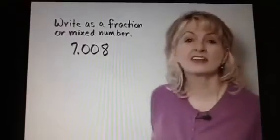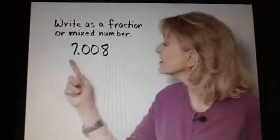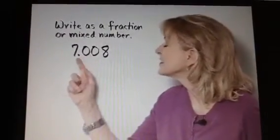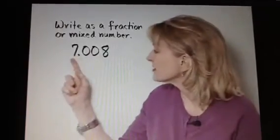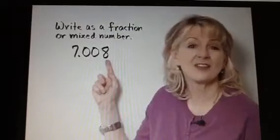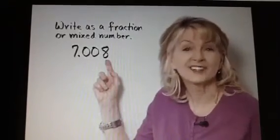How can we read this correctly? It is 7 and, let's see, tenths, hundredths, thousandths. So it's 7 and 8 thousandths. By reading it correctly, we can write it correctly, this time as a mixed number.